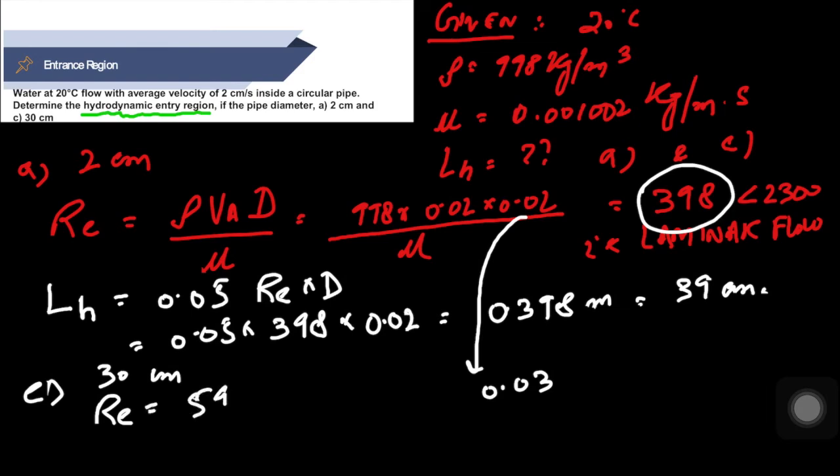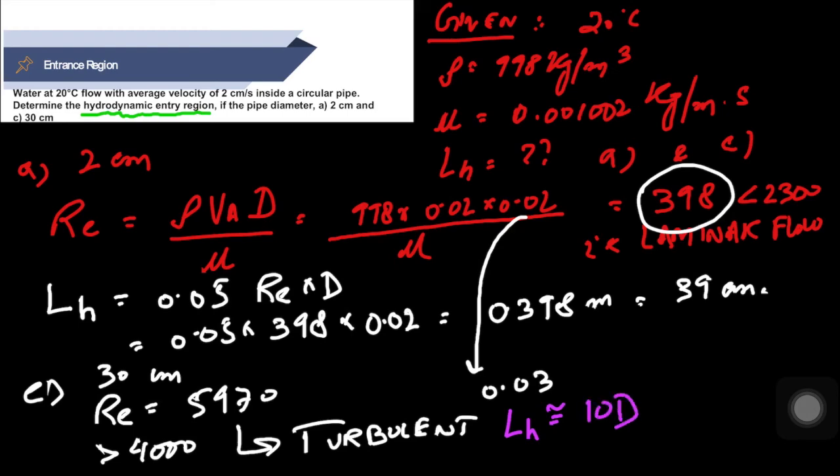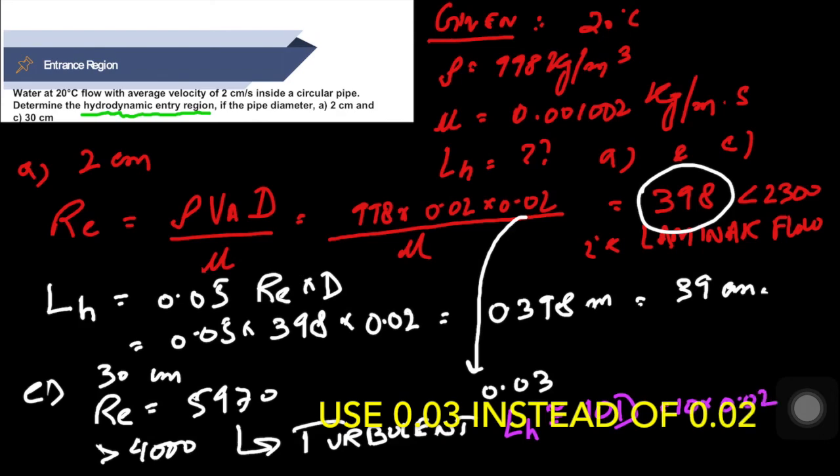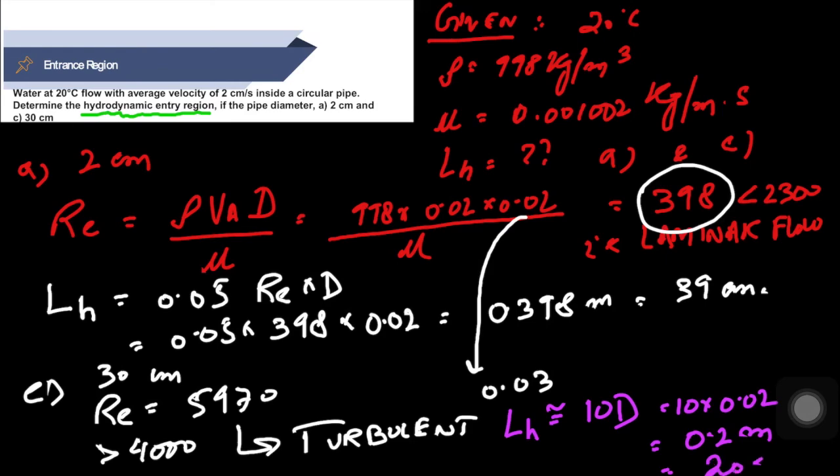If the Reynolds number is greater than 4000, then this is called turbulent flow. When the flow is turbulent, the formula is LH = 10 × diameter. So this is 10 × 0.02, which comes out to be 0.2 meter or 20 centimeter.